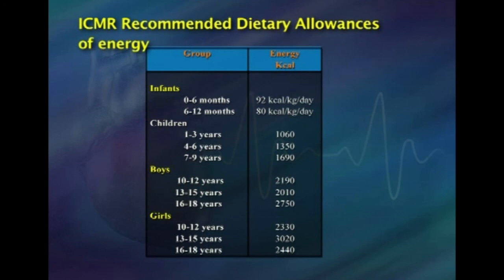For children aged 1–3 years the requirement is 1060 kcal; 4–6 years, 1350 kcal; and 7–9 years, 1690 kcal. For boys aged 10–12 years, 2190 kcal; 13–15 years, 2010 kcal; and 16–18 years, 2750 kcal. For girls aged 10–12 years, 2330 kcal; 13–15 years, 3020 kcal; and 16–18 years, 2440 kcal. Today we have covered energy requirements for humans, including measurement of basal metabolic rate, the respiratory quotient, and thermic effect of foods.